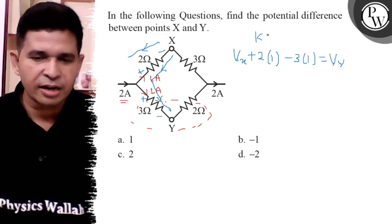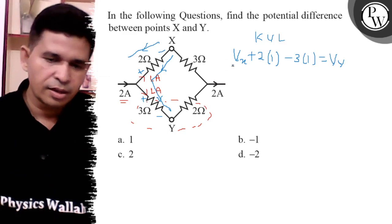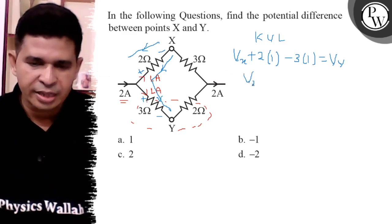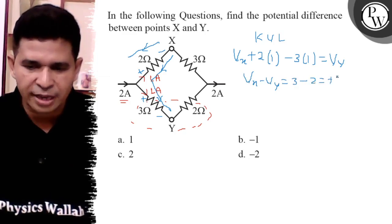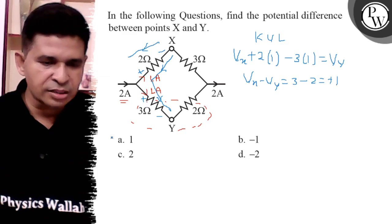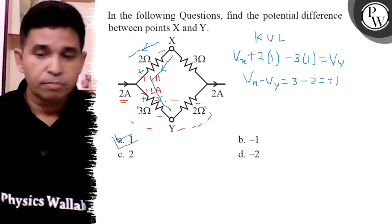Applying KVL, so Vx minus Vy is 3 minus 2, so it is plus 1. So final answer is A, plus 1.